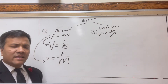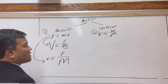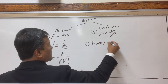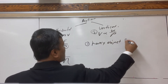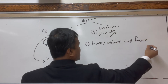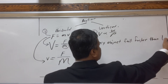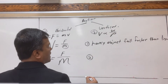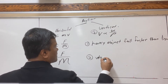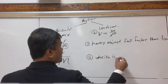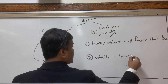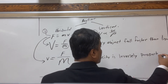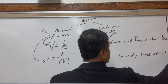Now, for vertical motion according to Aristotle, idea number one is that heavy objects fall faster than light objects, and number two, the velocity is inversely proportional to density.